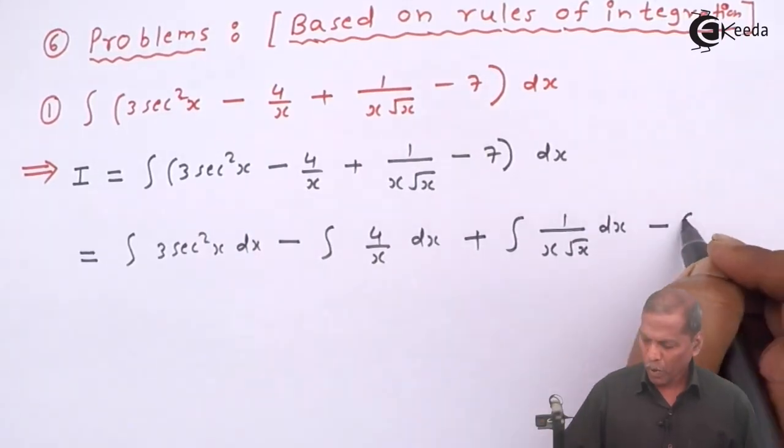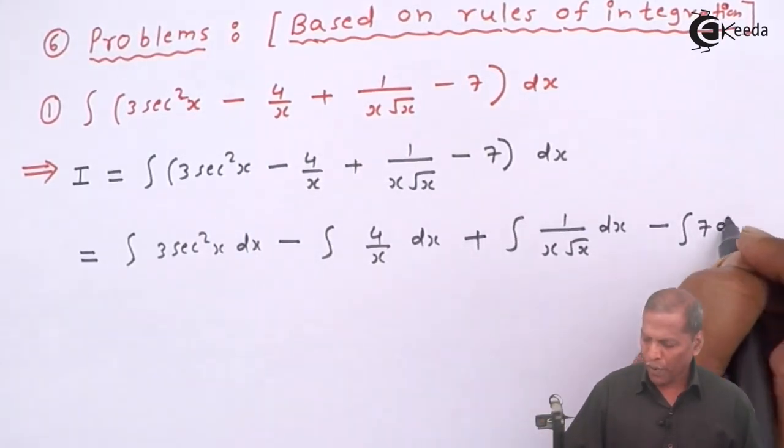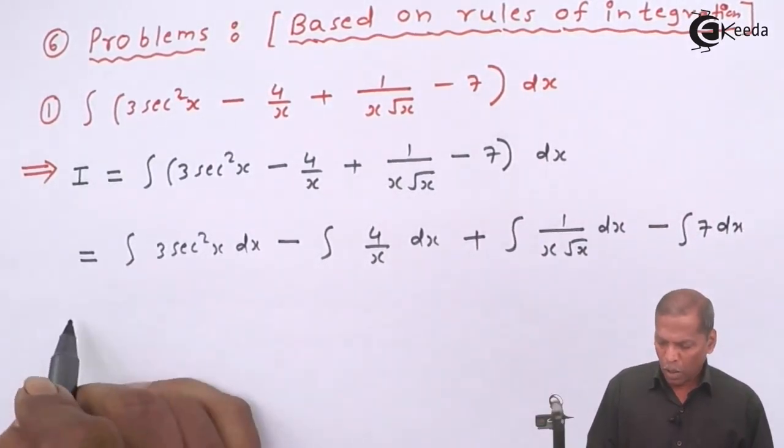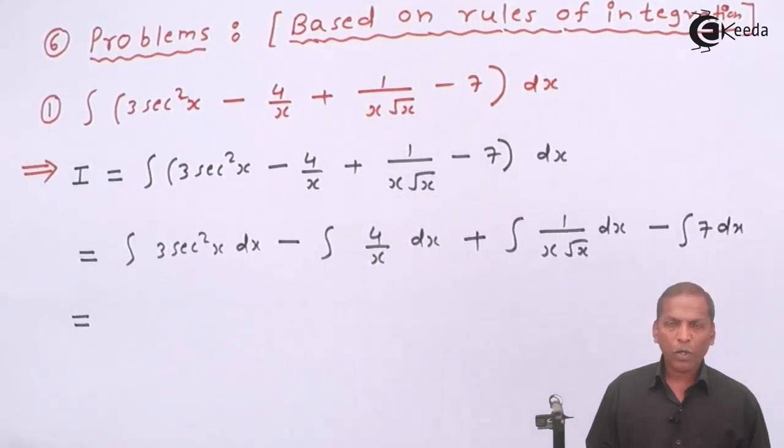In first integral 4 upon x minus integral 7 into dx.